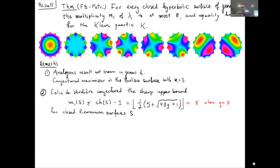If you plug in g equals three, the formula gives eight. Colin de Verdière conjectured that this upper bound is sharp — realized for some Riemannian surfaces in every topological type. So in genus three, the conjecture is that the upper bound of eight holds for every Riemannian surface, not just hyperbolic ones. But that's still open because the techniques we use only apply to hyperbolic surfaces.